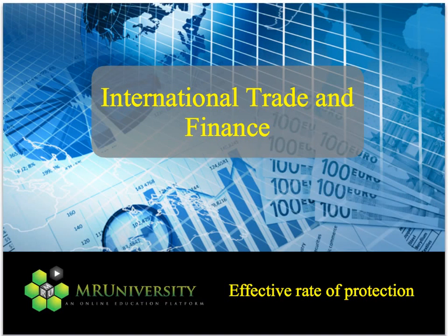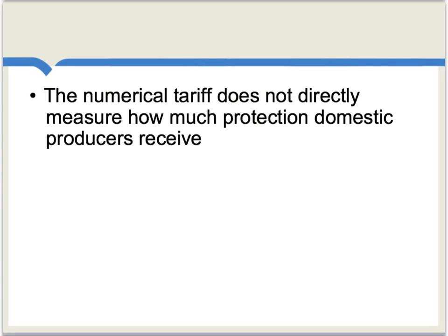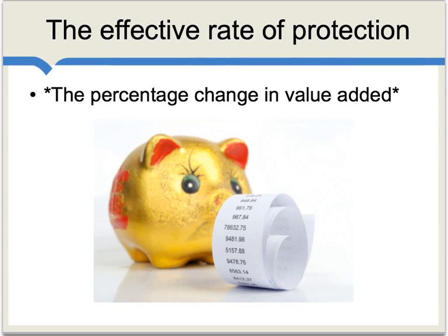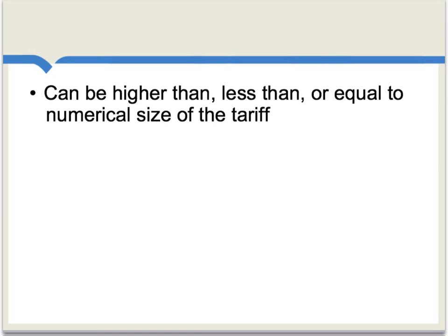Let's now consider the concept of the effective rate of trade protection. The key point here is that the numerical tariff does not directly measure how much protection domestic producers receive. You can think of the concept of an effective rate of protection as the percentage change in value added following a tariff. This percentage change in value added can be higher than, less than, or equal to the numerical size of the tariff.